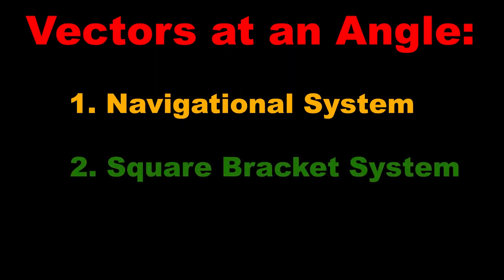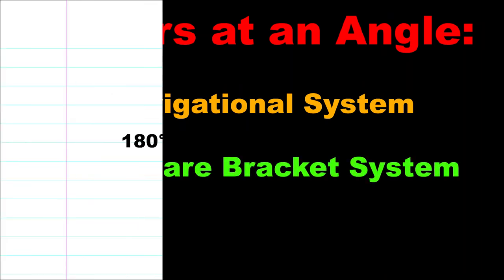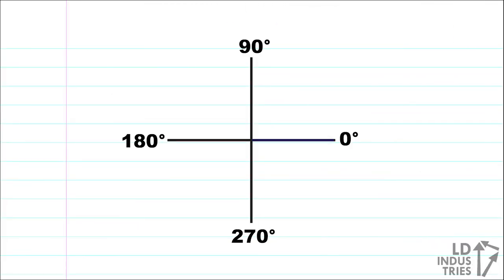The second method of vector notation I'm just going to call the square bracket system. In this system, all angles are measured going counterclockwise from the positive x-axis, and we write the angles with square brackets around them like this.